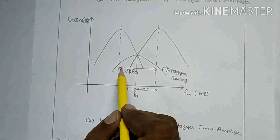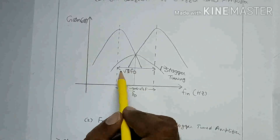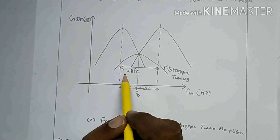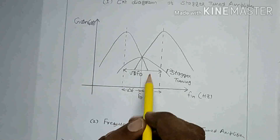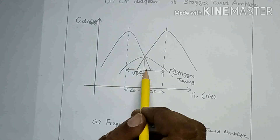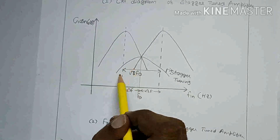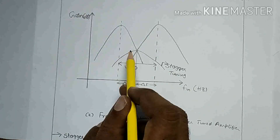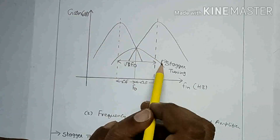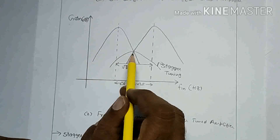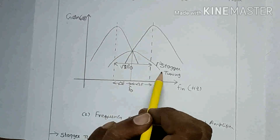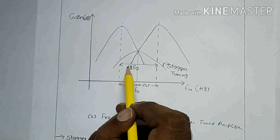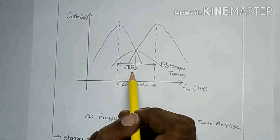The stagger-tuned amplifier has a bandwidth of square root of 2 into F-naught. This is the bandwidth of the first stage, and this is the bandwidth of the second stage. The combination of the two stages is the product of AV1 and AV2. The overall bandwidth you can get is as shown, and the bandwidth of the stagger-tuned pair is root 2 times F-naught.